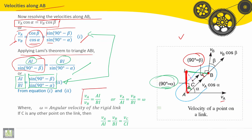So from both equations 1 and 2 we'll get V_A divided by V_B here is equal to AI divided by BI, or V_A divided by AI is equal to V_B divided by BI. This equals the angular velocity omega.